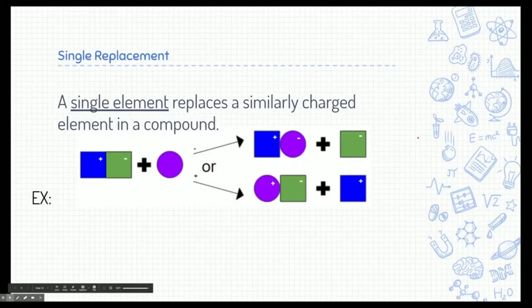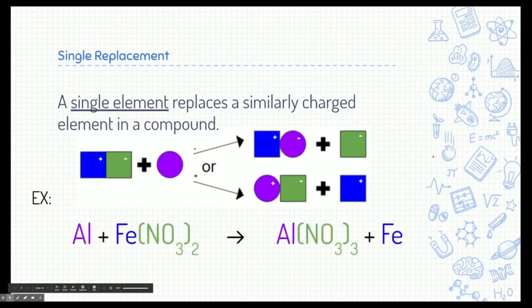All right. Next is single replacement reaction. This is where we have a compound and a single element. And that single element replaces a similarly charged element in that compound. I like to think of this kind of like a dance. Here we have a couple dancing. And then over here we have just a single person or element. And that element wants to dance. So it's going to go and ask one of the two other elements if it can butt in and dance. And depending on its charge depends on which element it's going to go ask. So let's take a look at a couple of examples. Here we have aluminum and iron-to-nitrate. In this case, we have our single element and a compound. Now, aluminum wants to go and dance.